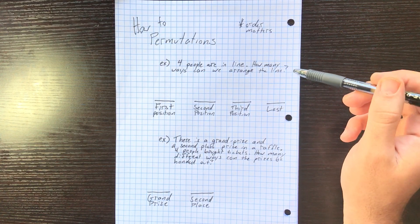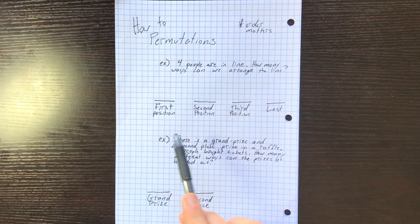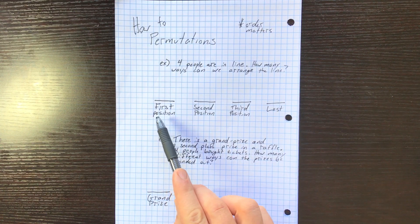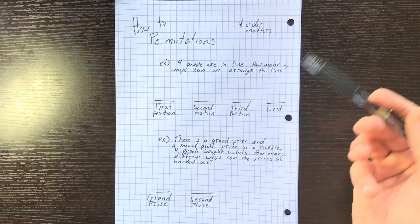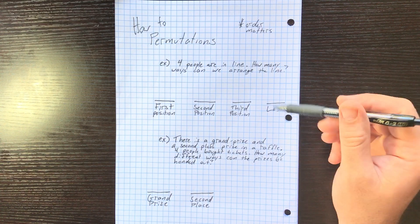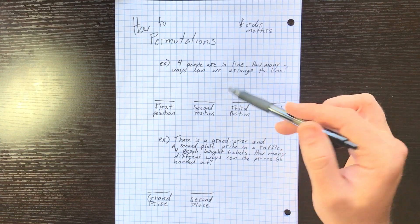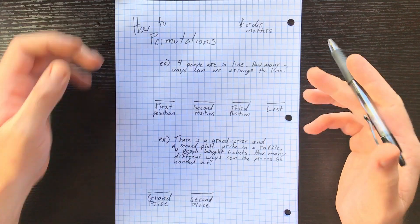So, four people are in a line. How many ways can we arrange the line? We have a first position, which is the ideal position to be in line, and we have a last position which is not as great. Because of that, we know the order matters and we're dealing with a permutation.